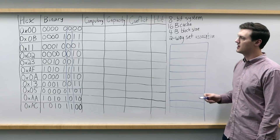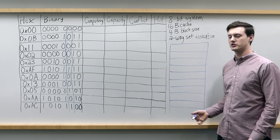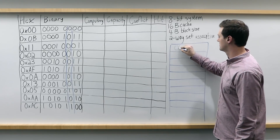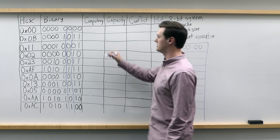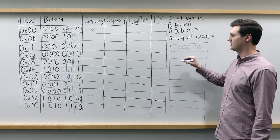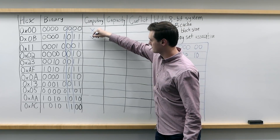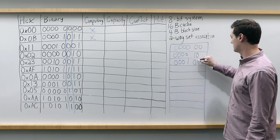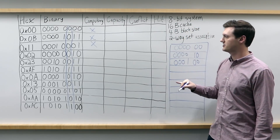To begin, our first access is 0x00 — all zeros in binary. The tag would just be 6 zeros, and since we're assuming the cache starts empty, this is naturally a cache miss. We add the tag to the cache and mark it as a compulsory miss. For 0x0B, the tag is four zeros then 1, 0 — not in the cache, so we add it and call it a compulsory miss. Same thing for 0x11, also compulsory. Now for 0x02, we see that the same tag of 6 zeros is already in our cache, so we would call that a hit for the time being — though we may need to shift it to capacity or conflict after the other simulations.